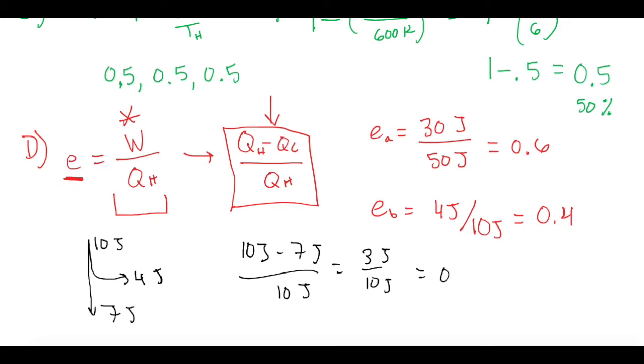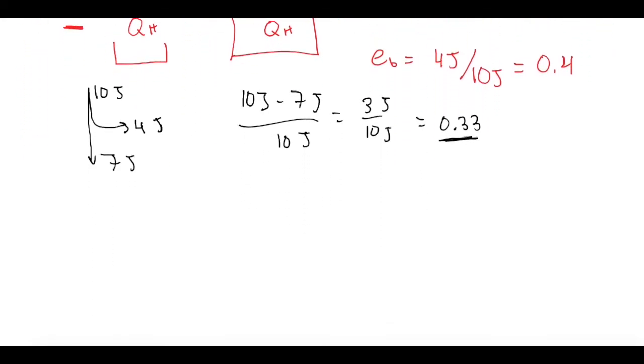which will give us an actual efficiency of 0.33 or 33%. So this is what the engine's efficiency actually would be, but since we use work, we're getting more work out than we can, so we're getting a higher efficiency than is possible. So let's go down to engine C, which is e for C is work is 10 joules out for work over QH which is 30 joules, and that gives us an efficiency of 0.33.